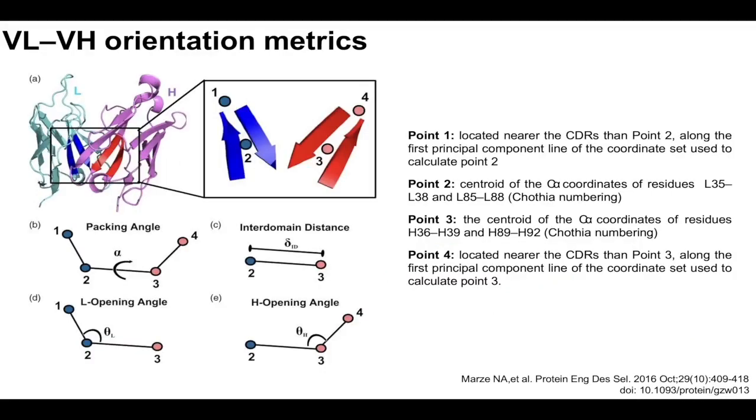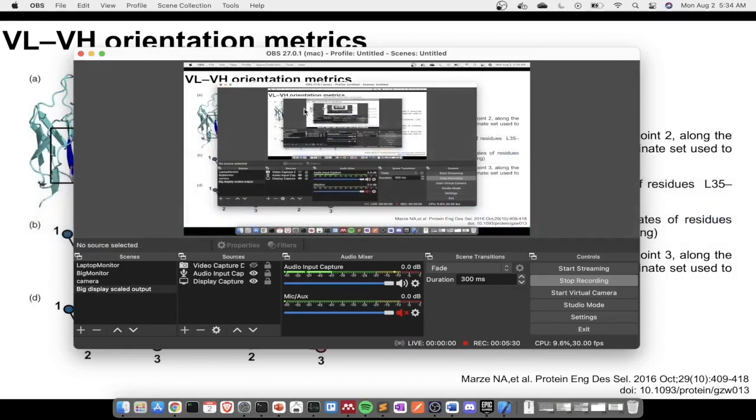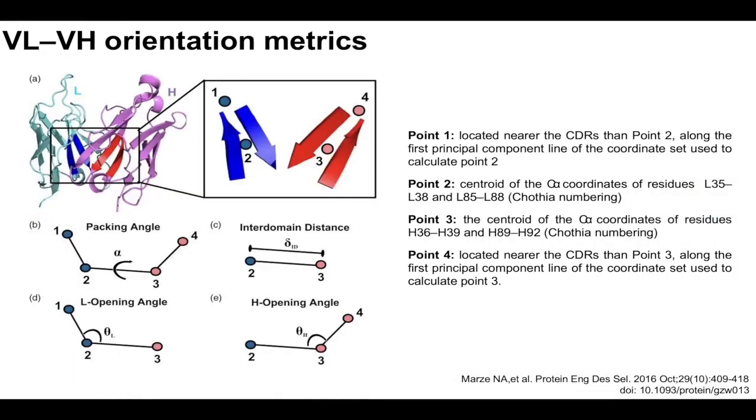So another thing that's sampled using experimental data is this VL and VH orientation. Here's a paper that's probably worth reading. It's Mars et al. 2016. And so in this, they came up with a way of describing a set of angles that demonstrates the interaction between a heavy and a light chain in such a way that you can sample each of these four angles in order to attempt a number of experimentally observed interactions between the two chains.